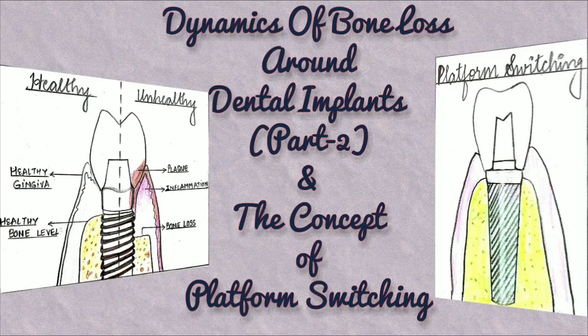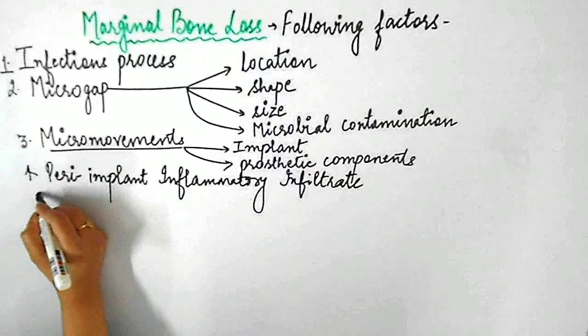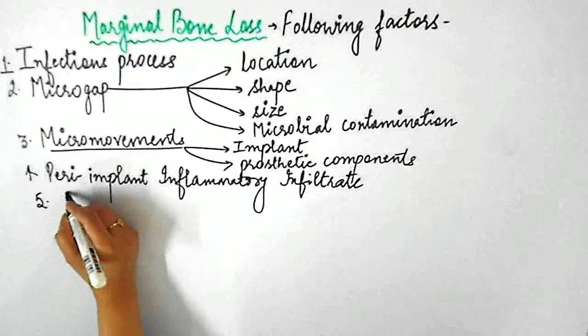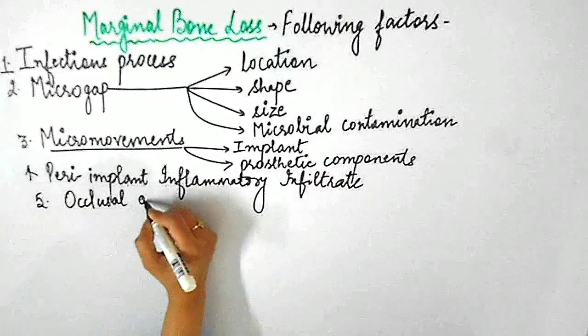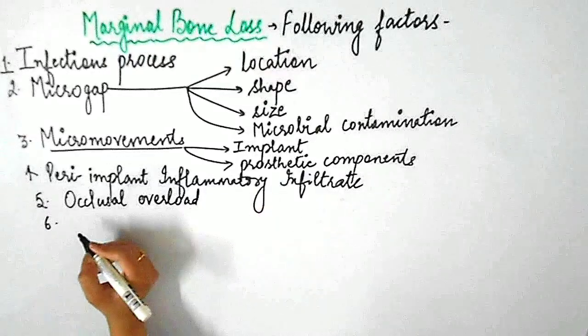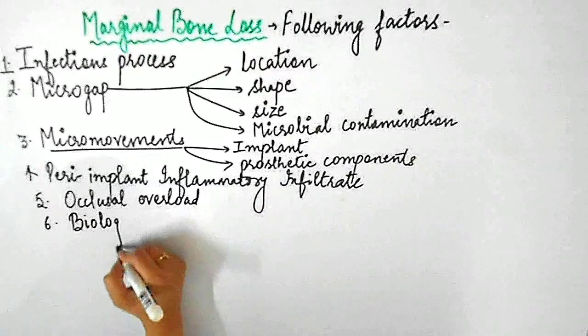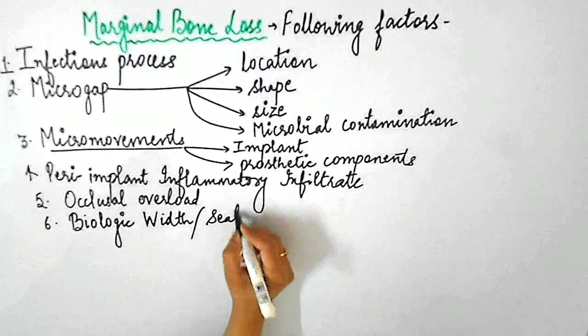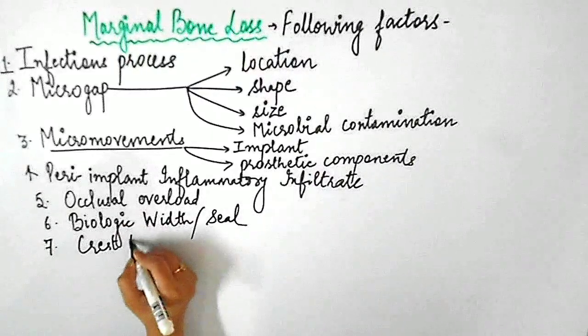Hello everyone, welcome back to my channel Dentistified. Today's video is basically part 2 of dynamics of bone loss around dental implants. In part 1 of this video, I talked about the process of bone remodeling that occurs around dental implants and various factors influencing crestal bone loss like microgap, peri-implant inflammatory infiltrate, and micro-movements of the implant and prosthetic components. Link for that video will be provided in the description box below.